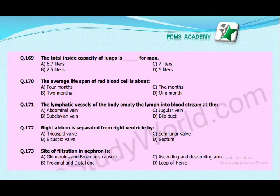The total inside capacity of lungs is: 6.7 liters, 7 liters, 2.5 liters, or 5 liters? The correct answer is 5 liters. The average lifespan of red blood cells is about: 2 months, 5 months, or 1 month? The correct answer is 4 months.